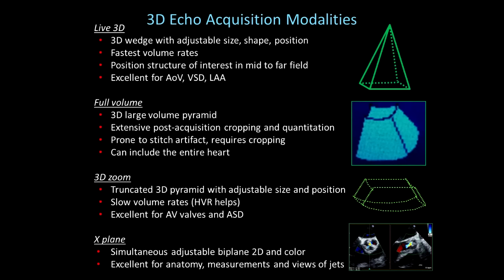The second commonly used 3D echo acquisition modality is 3D full volume. This involves a large volumetric pyramid of 3D data. It requires extensive post-acquisition cropping and quantitation. It's prone to stitch artifact, and we will talk about ways to mitigate that and optimize the cropping. Full volume can be used to include the entire heart structures, excluding some great vessels.